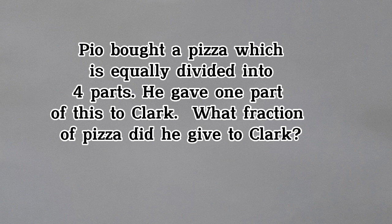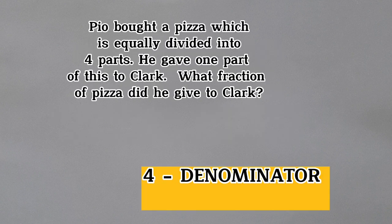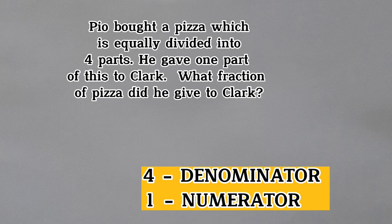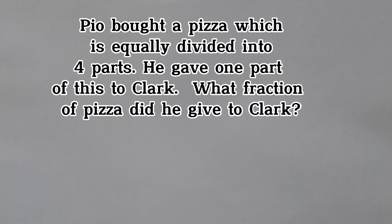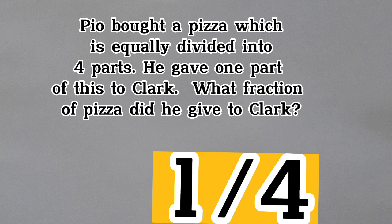Let's solve this one. Let's answer this problem. Pio bought a pizza which is equally divided into four parts. Because he gave one part of his pizza to Clark, what fraction of pizza did he give to Clark? Four is our denominator. One is the numerator, because one pizza was given to Clark. So the fraction of this pizza is one over four.